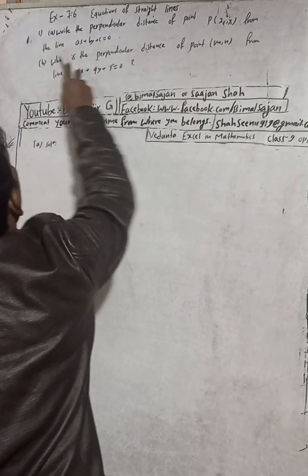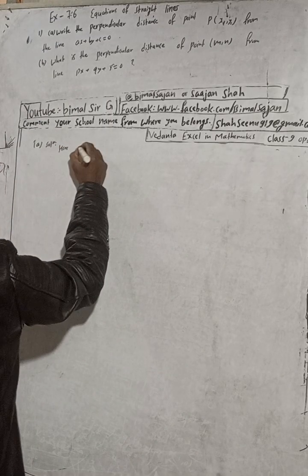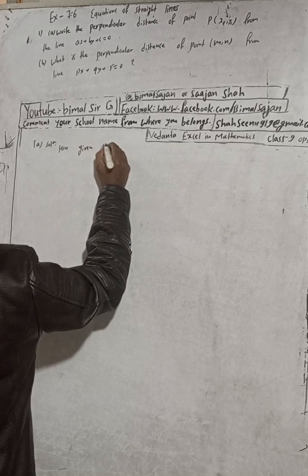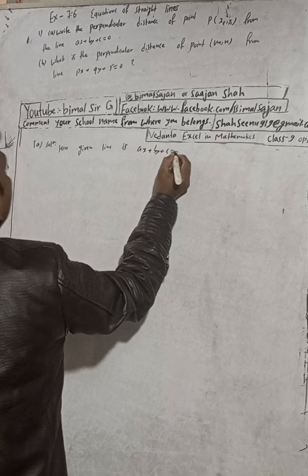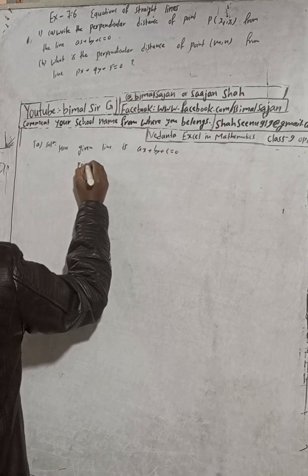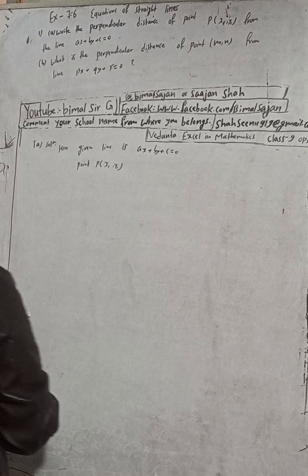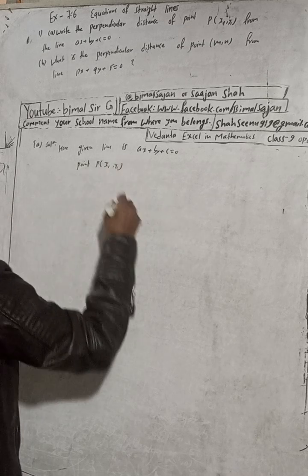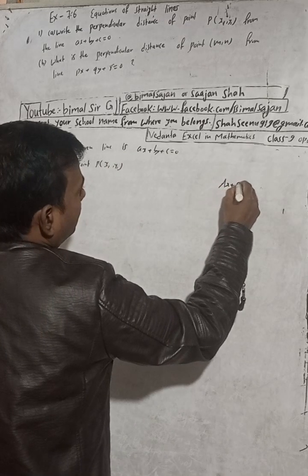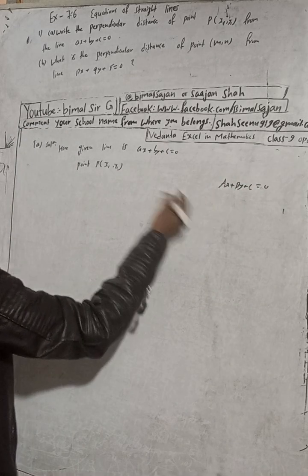Now the question is here: the given line is zero and the point is given. We need to find the perpendicular distance. To do that, equate this equation with the standard format ax plus by plus c.